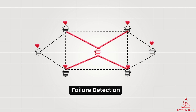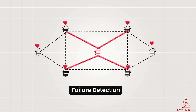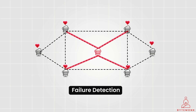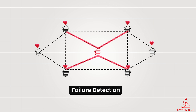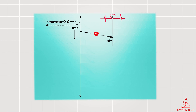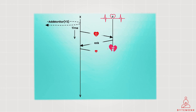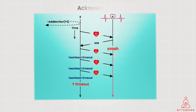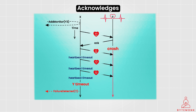In a distributed system, multiple nodes or components need to monitor each other's health and availability. The heartbeat mechanism is initialized by configuring settings such as the frequency of the heartbeat messages and the addresses of nodes to communicate with. Nodes or components continuously listen for incoming heartbeat messages from their peers. When a node receives a heartbeat message from a peer, it acknowledges the receipt to confirm that the sender is alive and responsive.